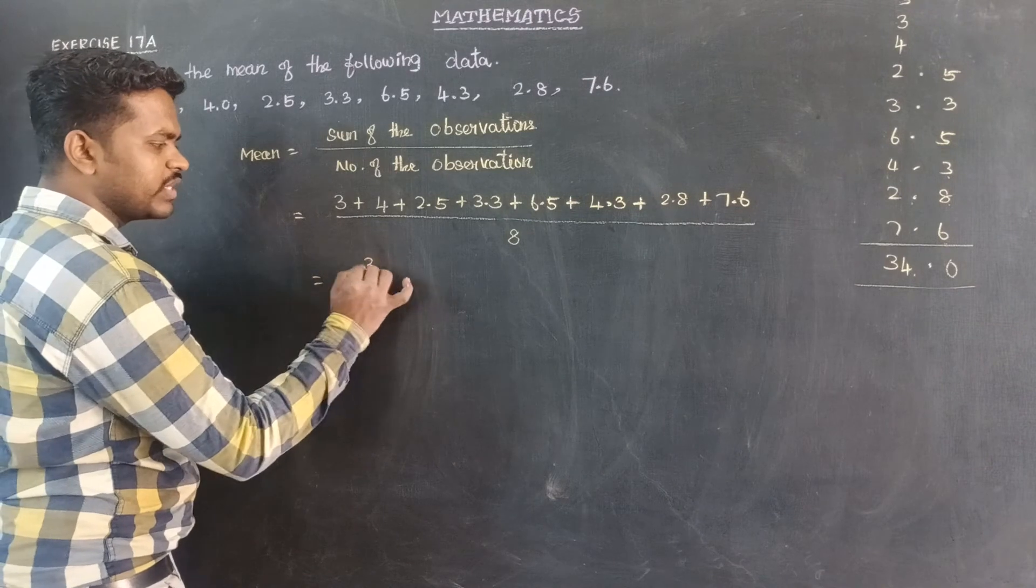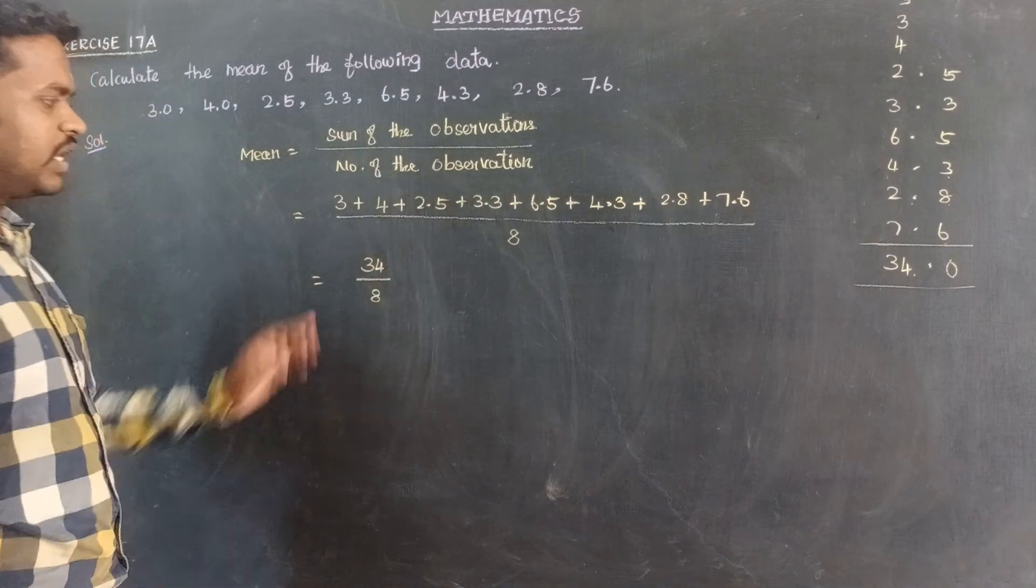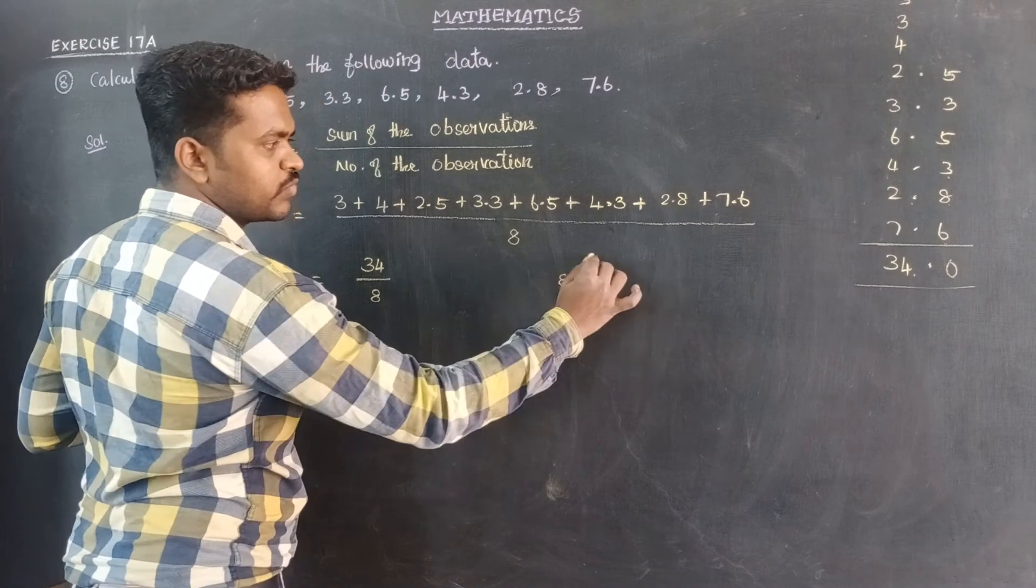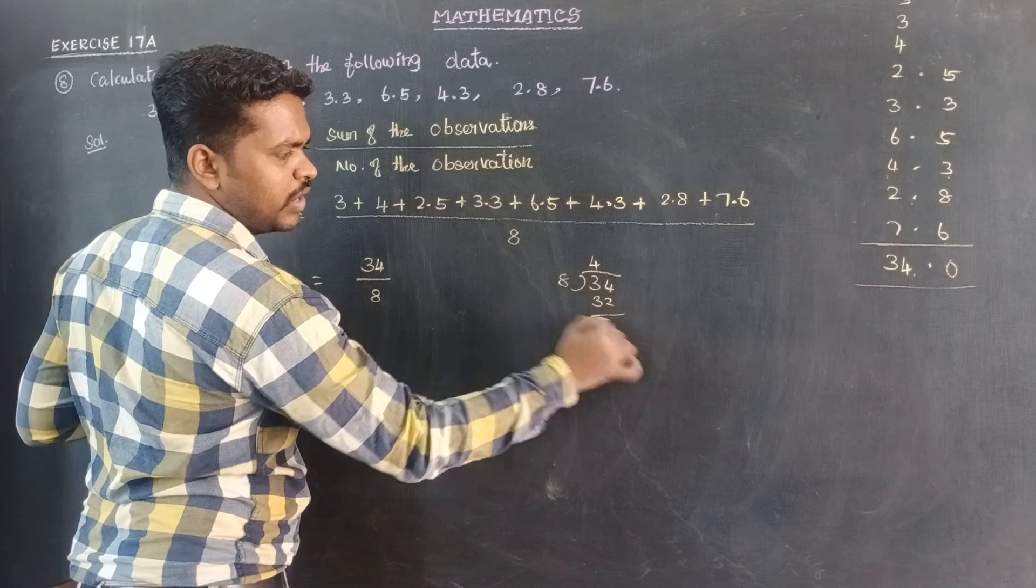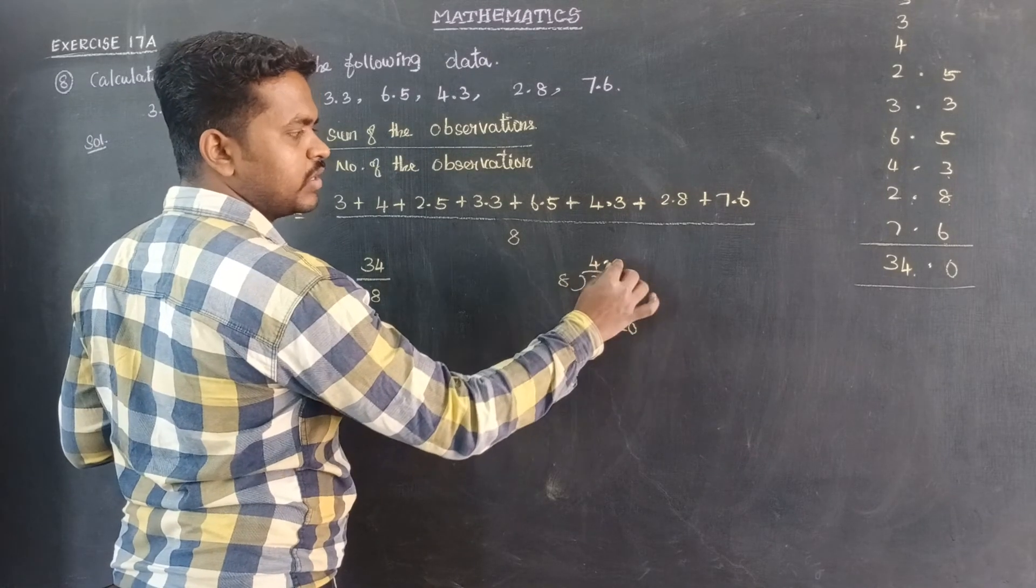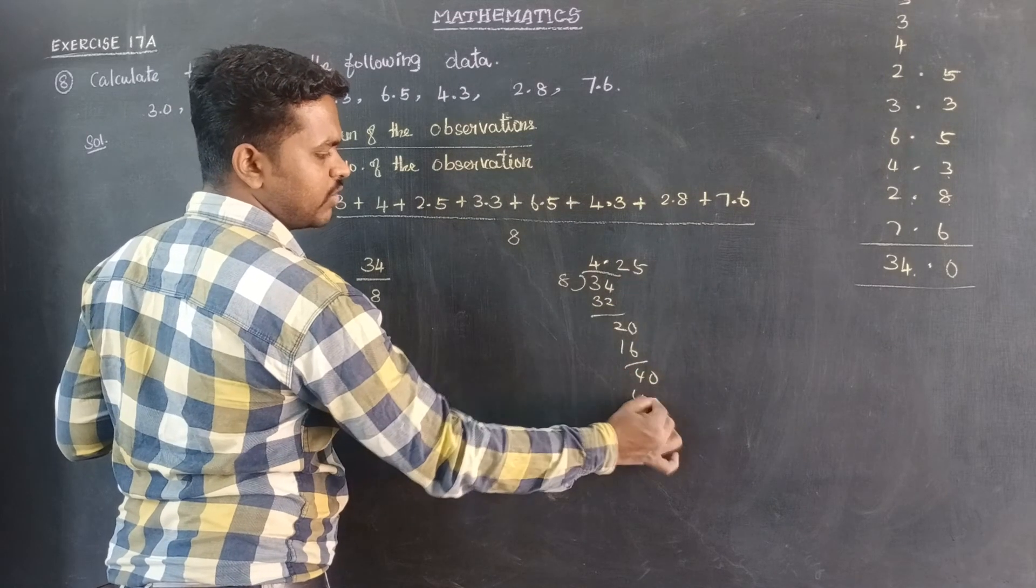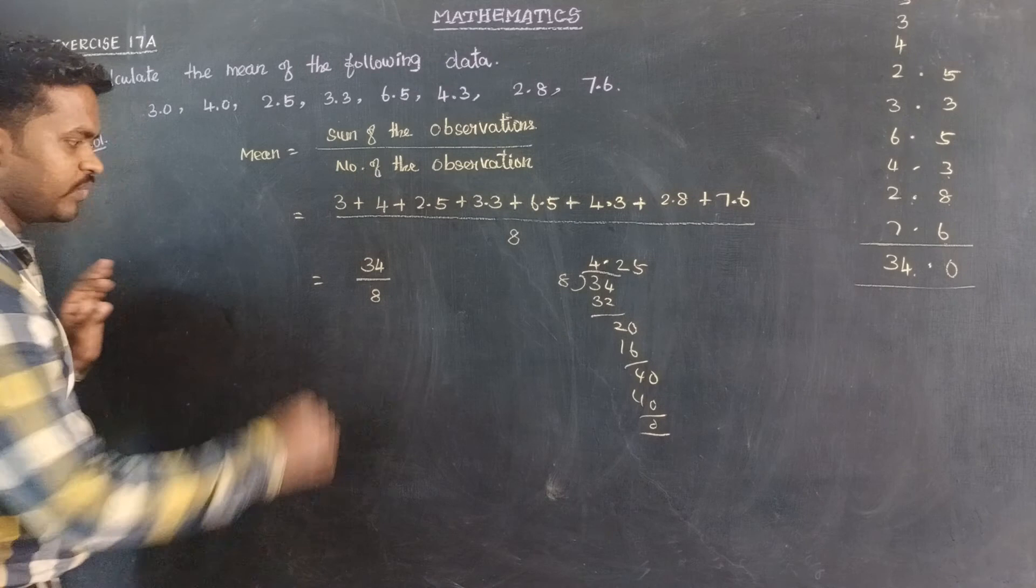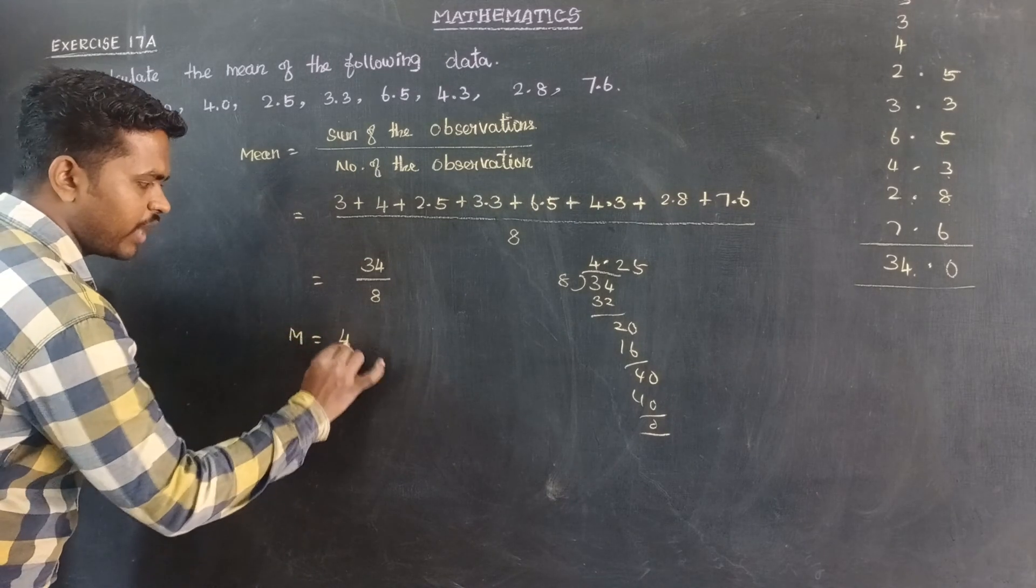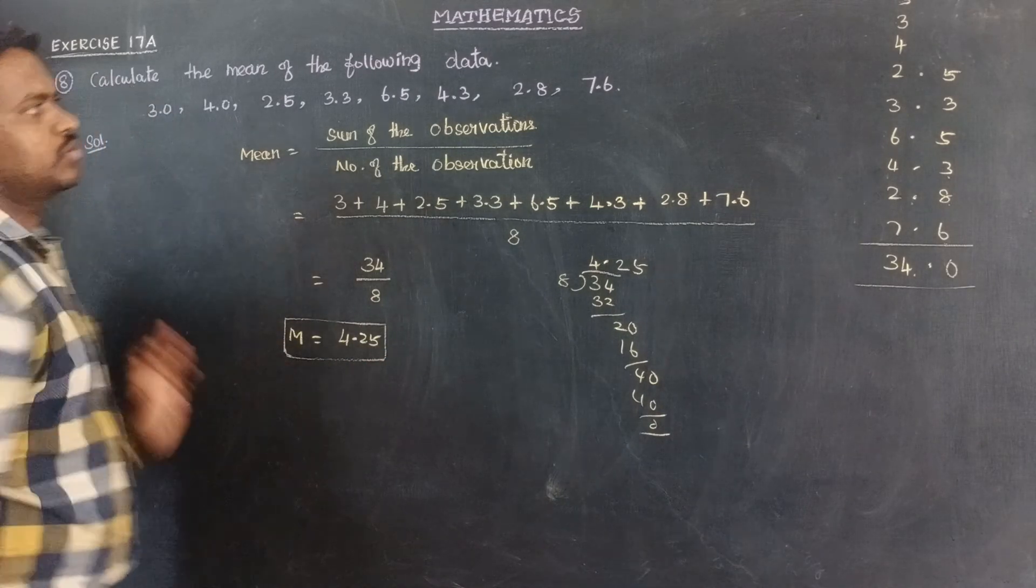The number 34 is divided by 8. 4 times 8 is 32, remaining 2. Again point, which is 0 at tenth place. 2 times 8 is 16, remaining 4, one more 0. 5 times 8 is 40. The remainder is 0. That is, mean is equal to 4.25. Mean value is equal to 4.25.